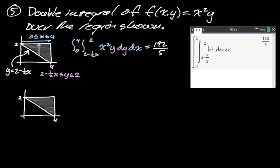I'm going to do it again, showing what happens when we switch the bounds. What if your first instinct is to think y goes from 0 to 2? Well, I need to invert the equation of that line. So y = 2 − ½x becomes x = −2(y − 2).